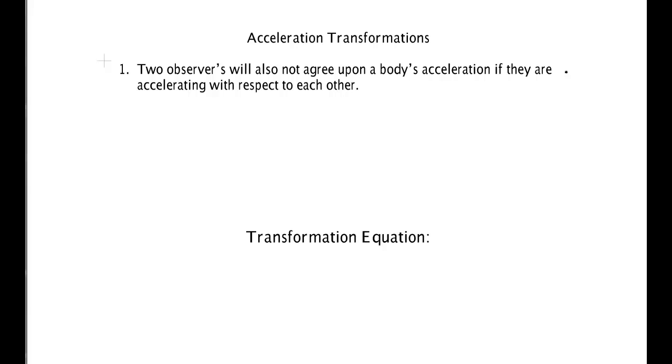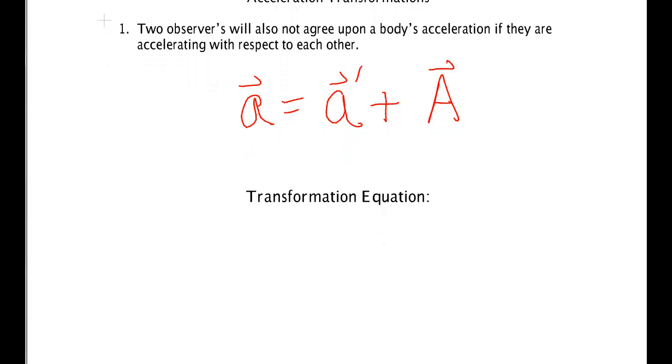The acceleration transformation equation looks exactly like what the velocity and position transformation equation did. The acceleration of an object seen in the unprimed observer's frame looks like the acceleration of the object in the primed plane plus the acceleration of the primed observer as measured by the unprimed observer. Exactly the same sort of thing that we saw previously.